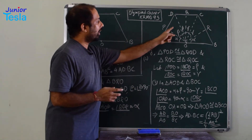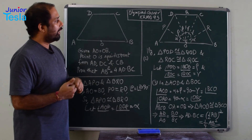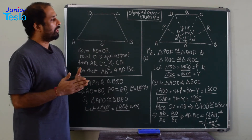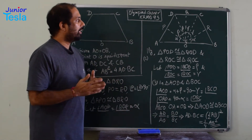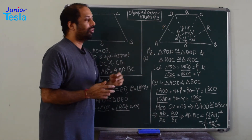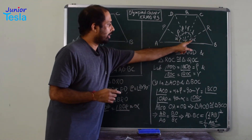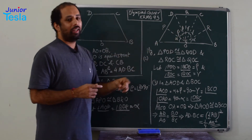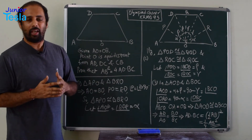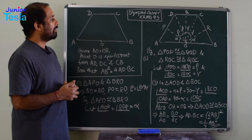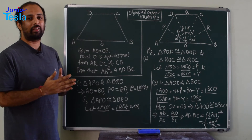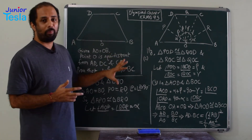Similarly, if I take triangles OPD and OQD: OD is the common side for both triangles, OP = OQ (given), and angle OPD = angle OQD = 90°. So those two triangles are also congruent. Now I will call the equal angles from this pair as alpha. Similarly, the equal angles from the next pair are called beta. We also have triangles OQC and ORC: OC is common, OQ = OR (given), and angles Q and R are both 90°. So those two triangles are also congruent. We actually got three pairs of congruent triangles.